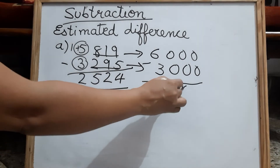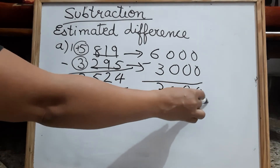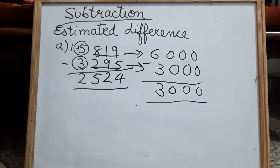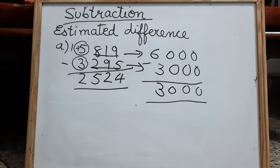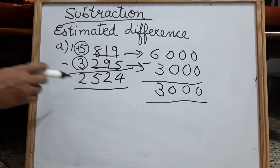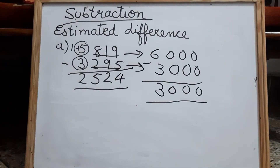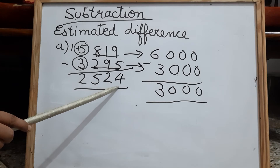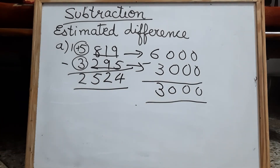So what is the difference? 3000. 2524 is the actual difference, and 3000 is the estimated difference.